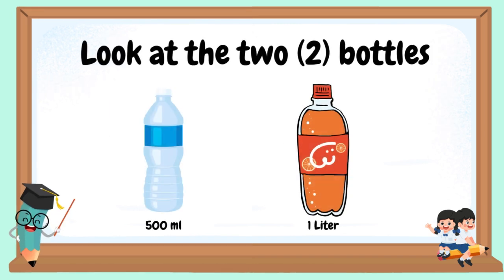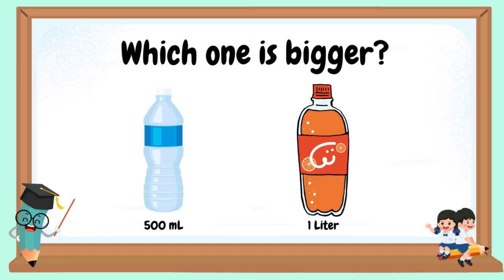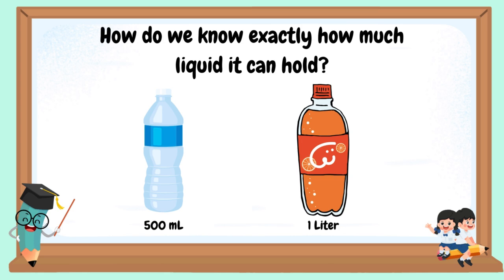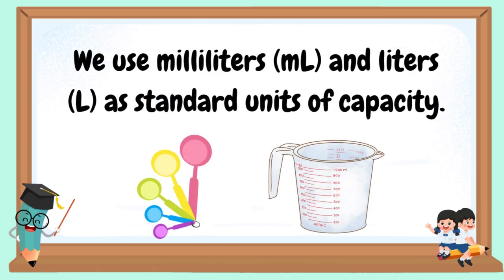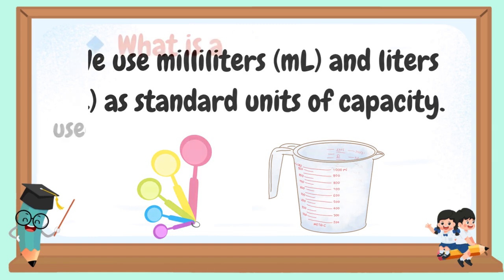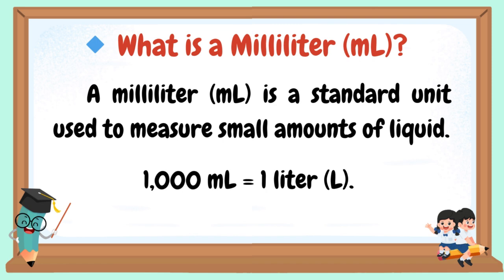Look at the two bottles. Which one is bigger? How do we know exactly how much liquid it can hold? We use milliliters and liters as standard units of capacity. A milliliter is a standard unit used to measure small amounts of liquid. One thousand milliliters is equal to one liter.